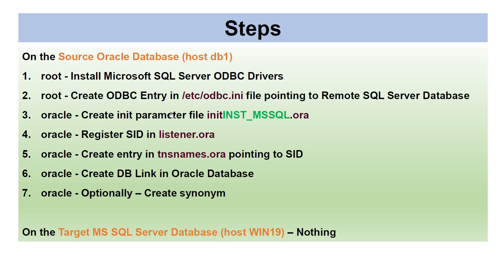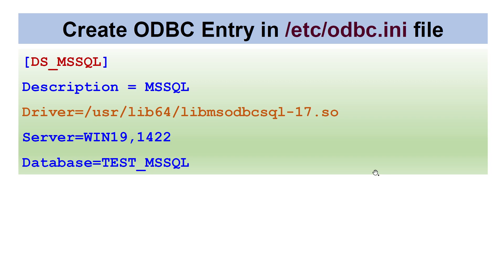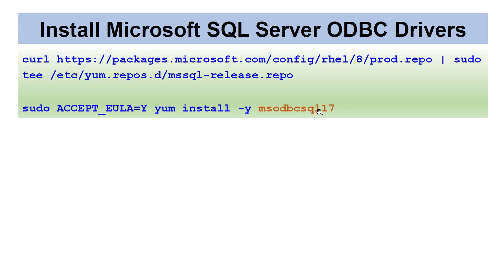The first step is installing the Microsoft SQL Server ODBC driver. We will download a specific repo and then install the msodbcsql17 package. Based on your SQL Server version and operating system version, you may want to install a different ODBC driver. This particular driver file will be installed as part of this package.